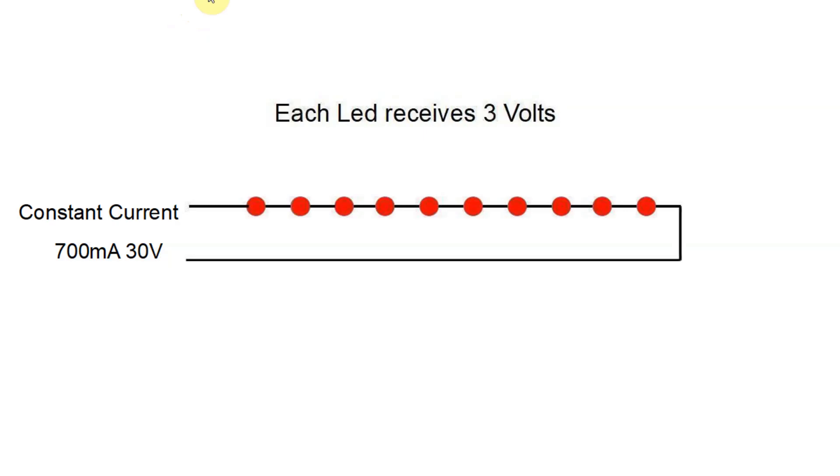Now the other type is constant current. We've got a constant current power supply and it's putting out 700 milliamps and in this case it's adjusted its voltage to put out 30 volts and each LED is getting 3 volts. So they're happy.